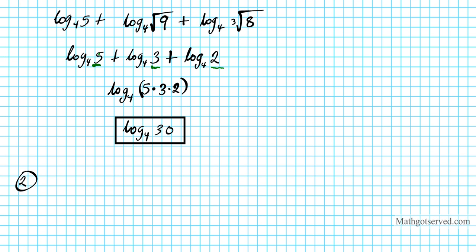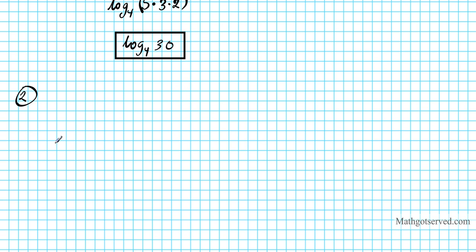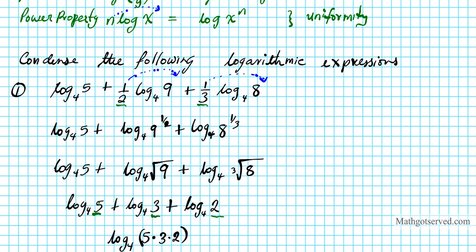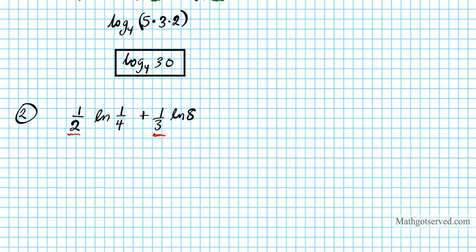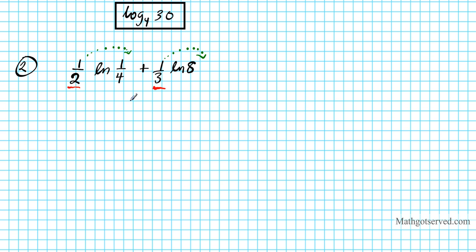For question 2, we want to condense: one-half of the natural logarithm of one-fourth, plus one-third of the natural logarithm of 8. We notice they have coefficients, so they're not uniform for condensing. In order to apply the condensing property, we need to get rid of the coefficients — this one-half and one-third are problems. We're going to use the power property to power up these coefficients. Remember, all the properties that apply to log base n also apply to ln, because ln is log base e.